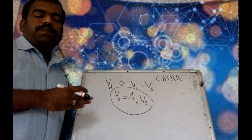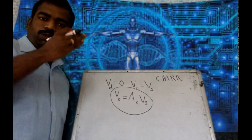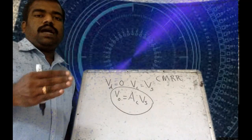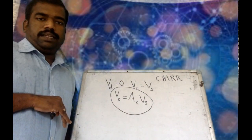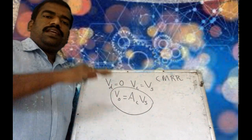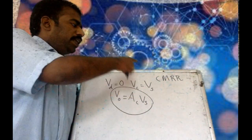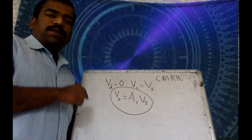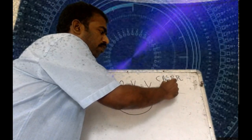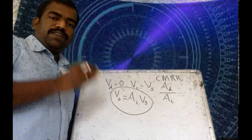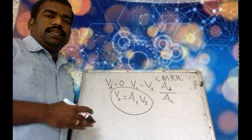CMRR — Common Mode Rejection Ratio — represents the ability of the operational amplifier to reject the common signal. It also tells you how good the amplifier is at amplifying the differential signal. CMRR can be expressed as the ratio of differential gain AD to common mode gain AC.